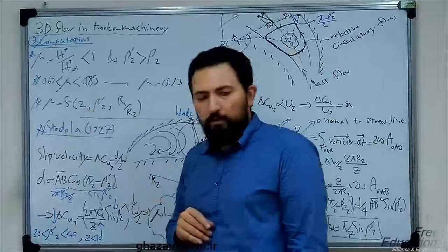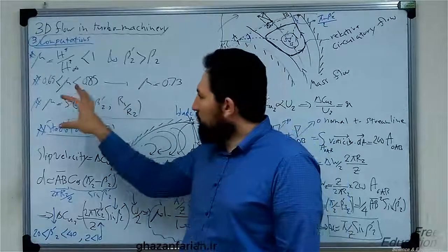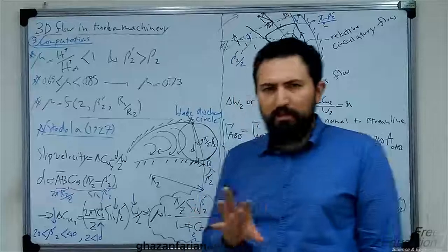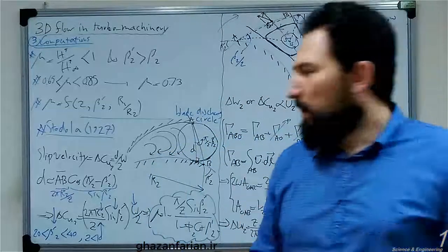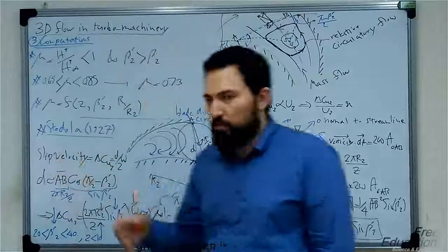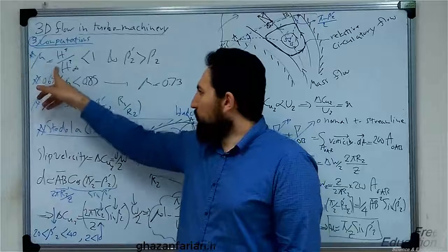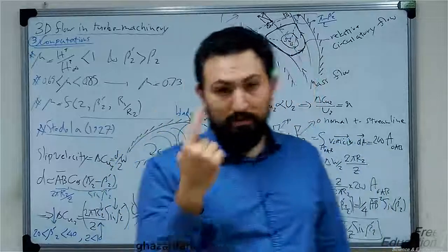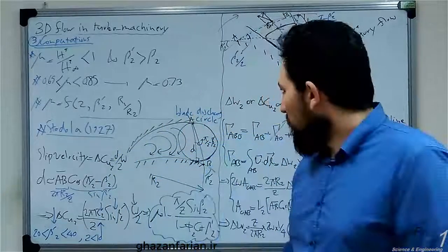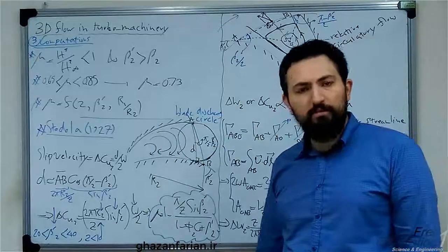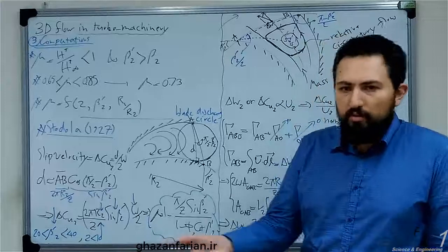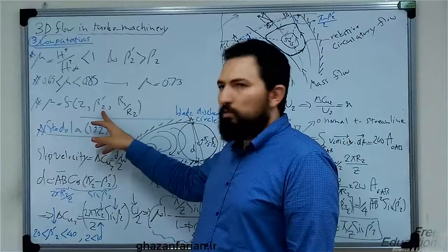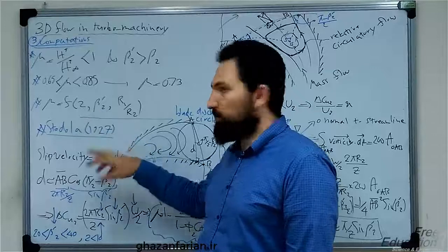The magnitude of the slip factor is something between 0.65 and 0.85. When the flow becomes three-dimensional, the value of the head decreases, so this ratio is less than unity. If you want to propose a single value, Stodola suggested that 0.73 is a good starting estimate. The slip factor is also a function of the number of blades and the angle of the blades at the outlet, or the trailing edge of the blades.